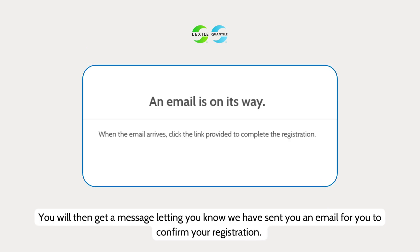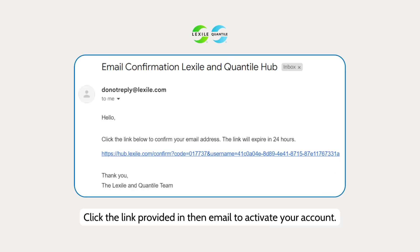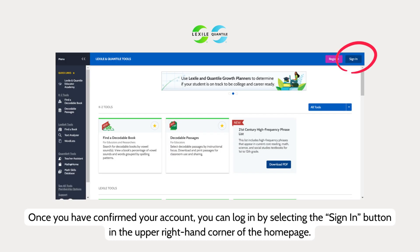You will then get a message letting you know that we have sent you an email for you to confirm your registration. Click the link provided in the email to activate your account. Once you have confirmed your account, you can log in by selecting the Sign In button in the upper right hand corner of the home page.